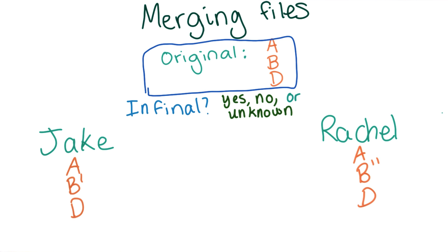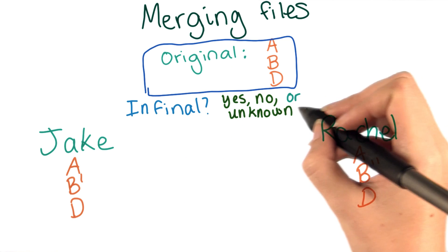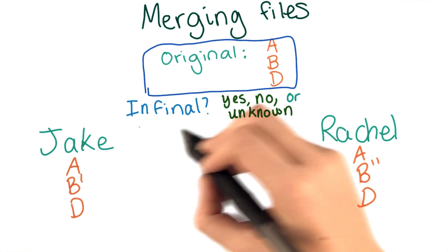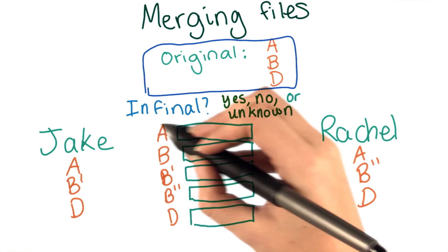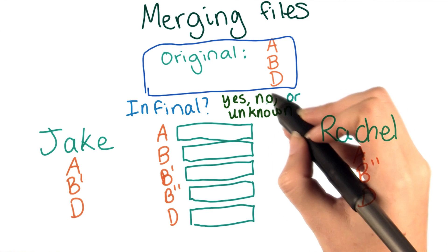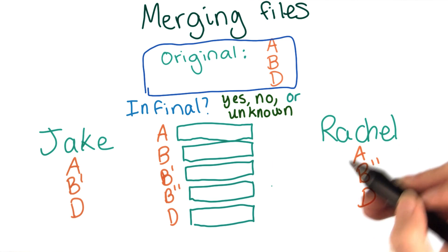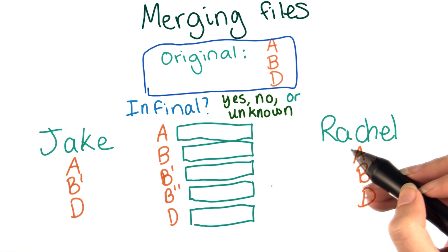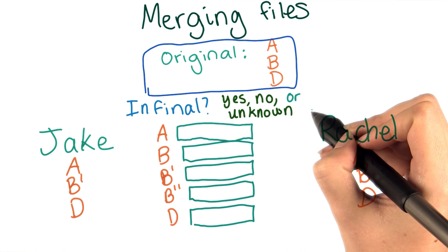Just like you did in the last exercise, consider for each line whether or not it should be in the final version. If you think it should be, mark it as yes. If you think it shouldn't, mark it as no. And if you don't think we really have enough information, mark it as unknown.